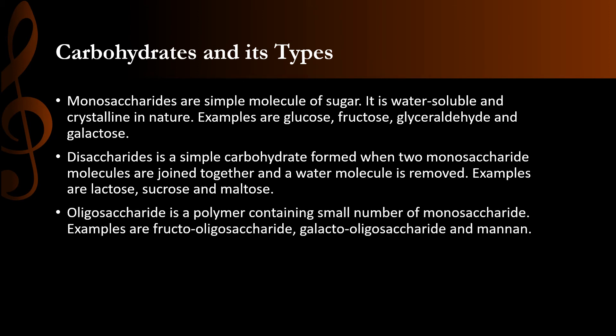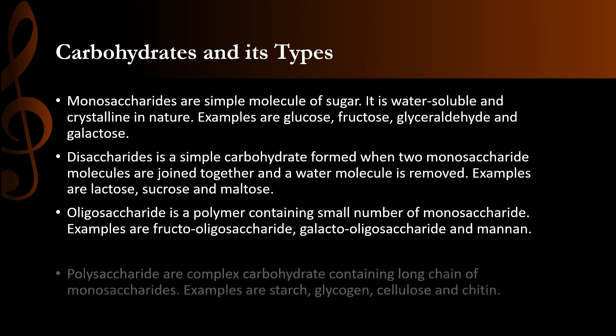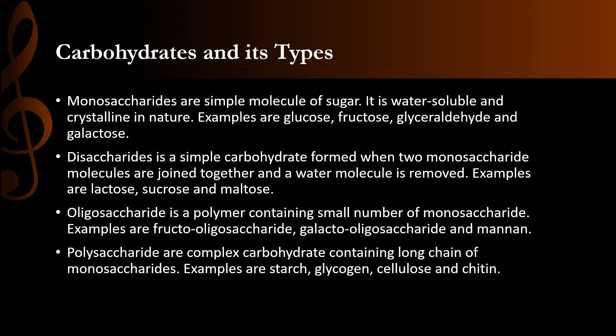Oligosaccharide is a polymer containing a small number of monosaccharides. Examples are fructooligosaccharide, galactooligosaccharide, and mannitol. Oligosaccharide is a polymeric chain of small monosaccharide molecules. Polysaccharides are complex carbohydrates containing long chains of monosaccharides. Examples are starch, glycogen, cellulose, and chitin. Polysaccharides are long chains of monosaccharides and are complex carbohydrate molecules.